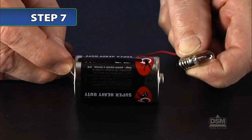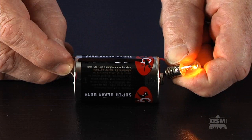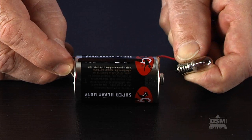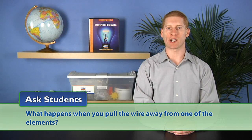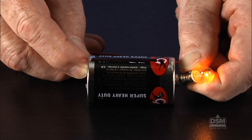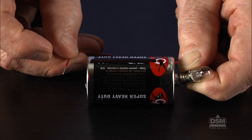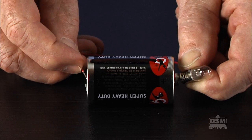Next, instruct students to reconstruct circuit A, as shown on their activity sheets. Ask students, what happens when you pull the wire away from one of the elements? Is it now an open or closed circuit? Students should see that the path of the current has been interrupted so the bulb does not glow, and that this circuit is now an open circuit.